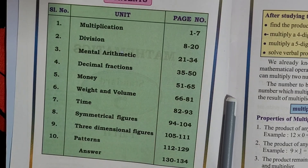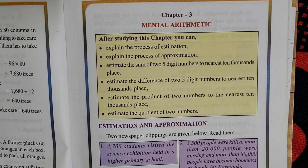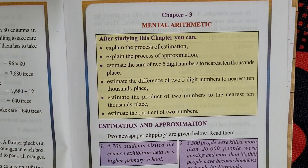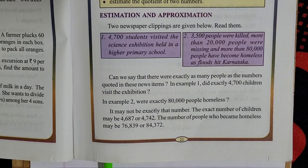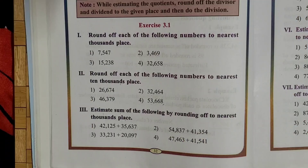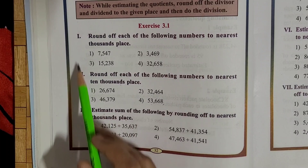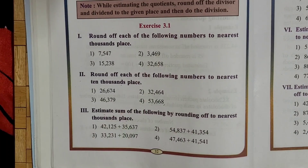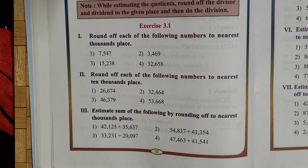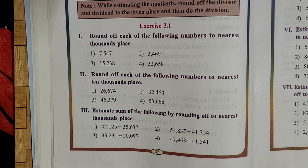So open page number 21. Here it is — chapter number 3, mental arithmetic, which is there on page number 21. In this lesson we have solved the first main and second main from exercise 3.1. So today in this class we are going to solve the third main. Let's start.